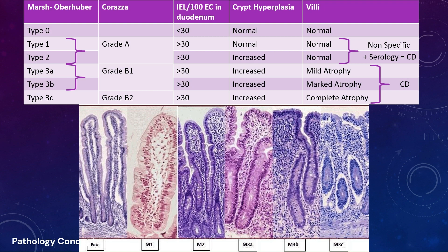Type 3 is the typical lesion of celiac disease, showing villus atrophy with a villi-to-crypt ratio less than 3:1, and an increase in intraepithelial lymphocytes. Type 3 is subdivided into three stages — partial, subtotal, and total villus atrophy — classified as 3a, 3b, and 3c respectively.